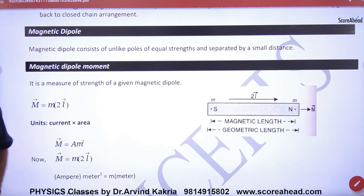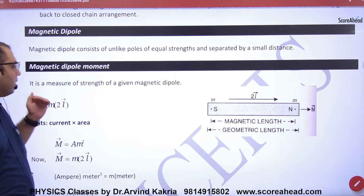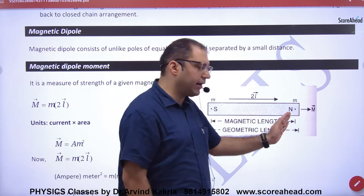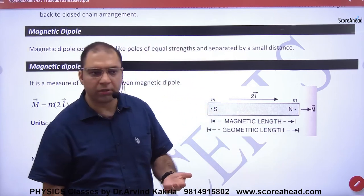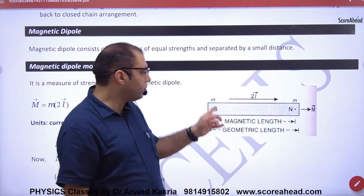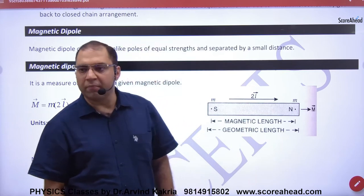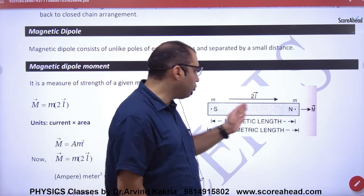We have done magnetic dipole moment. What is magnetic dipole moment? If it is a magnet, a bar magnet has south and north. There are two poles, pole strength is small m. So magnetic dipole moment is from south to north.